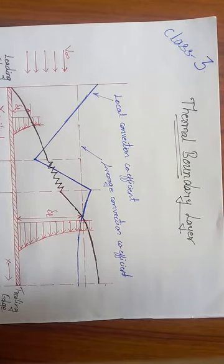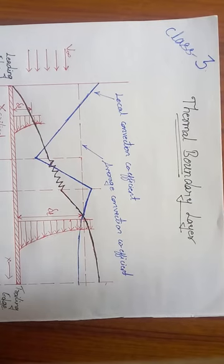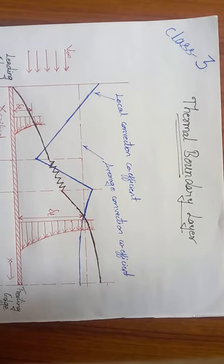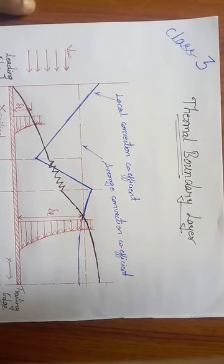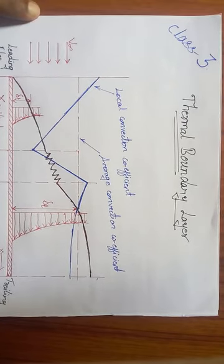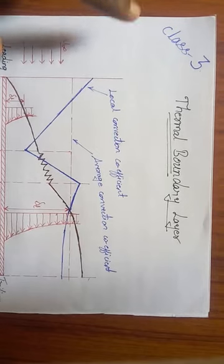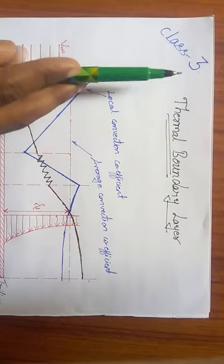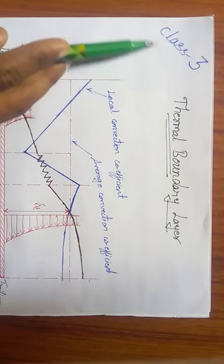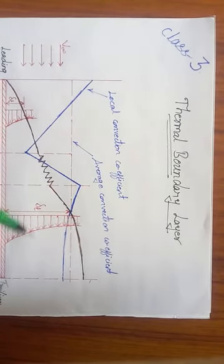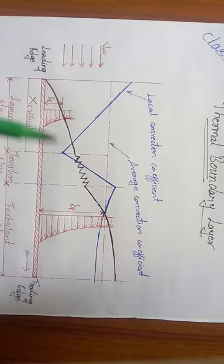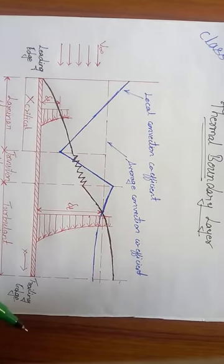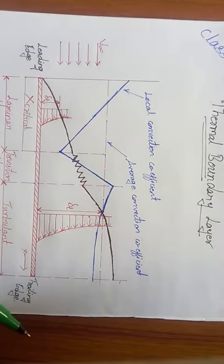Dear viewers, I welcome you to class number 3 on convection—specifically forced convection. Before entering into class number 3, I would like to summarize the points of class number 2, which is very much necessary to analyze this thermal boundary layer.